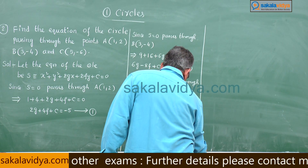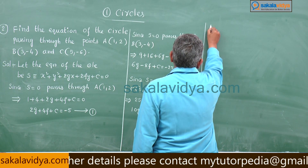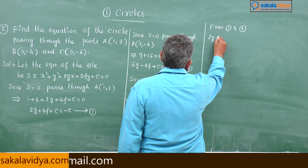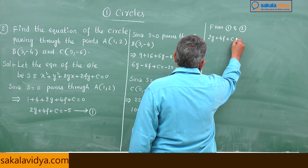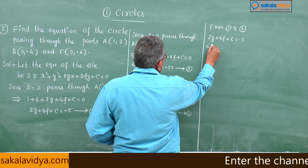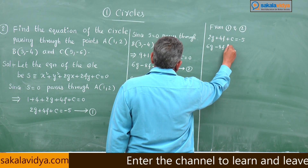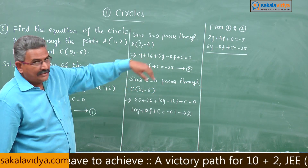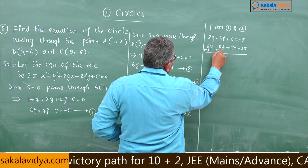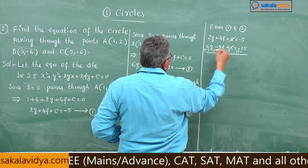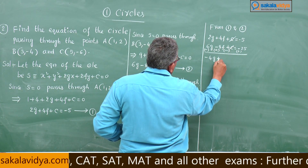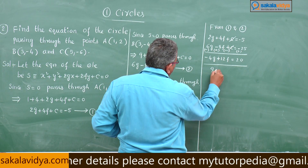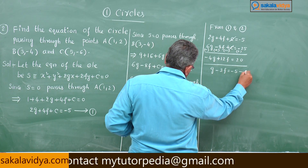Now from equations 1 and 2: equation 1 is 2g + 4f + c = −5, and equation 2 is 6g − 8f + c = −25. Subtracting to cancel c gives −4g + 12f = 20. Dividing by −4: g − 3f = −5. Say equation 4.